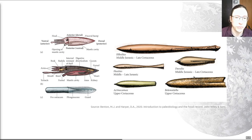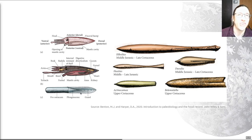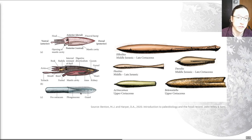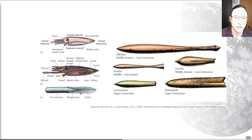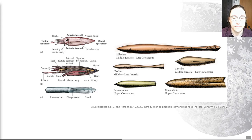The belemnite skeleton comprises three main parts. There's a bullet-shaped guard, also called the rostrum — it's solid and composed of radially arranged needles of calcite, which is key to recognizing these in the fossil record. At the anterior end there's a small conical depression housing the tip of the phragmacone, the chambered part analogous to other cephalopods. Within that are concave septa and a ventral siphuncle. Occasional soft-part preservation suggests these creatures were largely comparable in morphology to the squid. Like the ammonoids, they went extinct between the Cretaceous and the Paleogene.